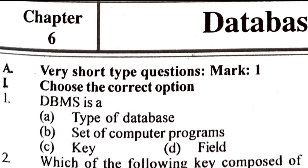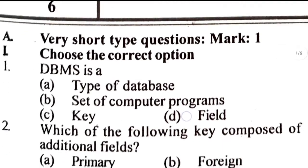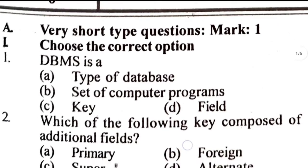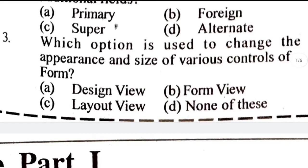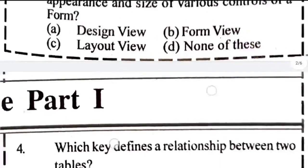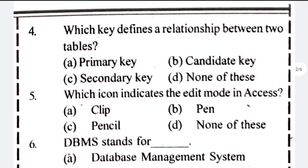Our first MCQ: DBMS is a type of database. Number two: which of the following key is composed of additional fields — primary, foreign, super, alternate — it will be super key. Number four: which key defines relationship between two tables — foreign key.